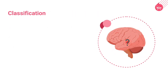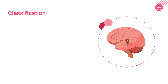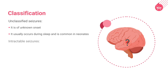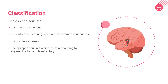Two minor but important categories include unclassified seizures and intractable seizures. Unclassified seizures are of unknown onset, usually occur during sleep, and are common in neonates. Intractable seizures are seizures which do not respond to any medication.